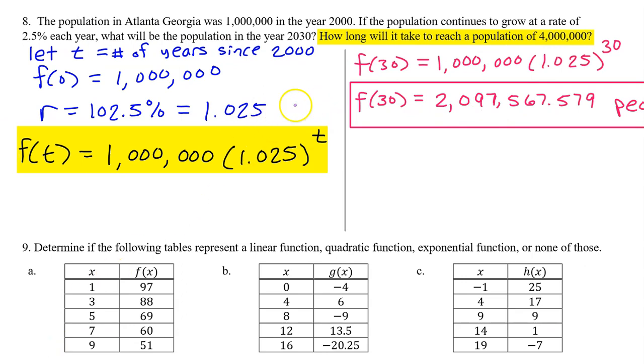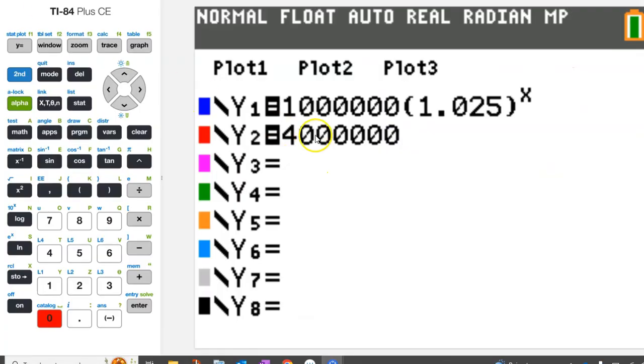We can also use the model to find out how many years it will take the population to reach 4 million. In other words, we need to solve the equation f(t) equals 4 million for t. Let's do this in the graphing calculator. Put f(t) in as y1, meaning put this model in as y1, and put 4 million as y2. On second thought, these numbers are very, very big. Let's see if we can make these numbers smaller before using the calculator.